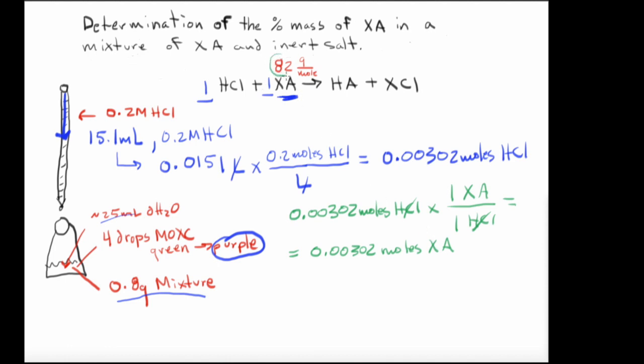Now to get to the mass of XA, we're going to need the molar mass of XA, which is 82 grams XA per mole. And this is going to equal, so we have 0.00302 times 82. So we're going to have, as a total here, 0.2476 grams of XA, determined by titration.